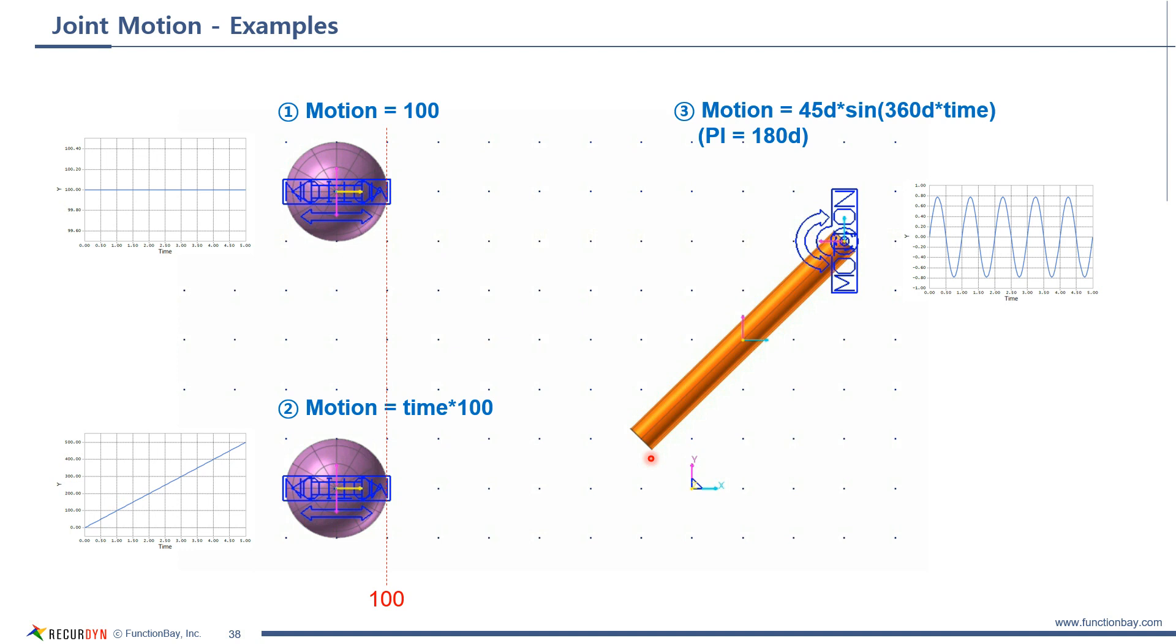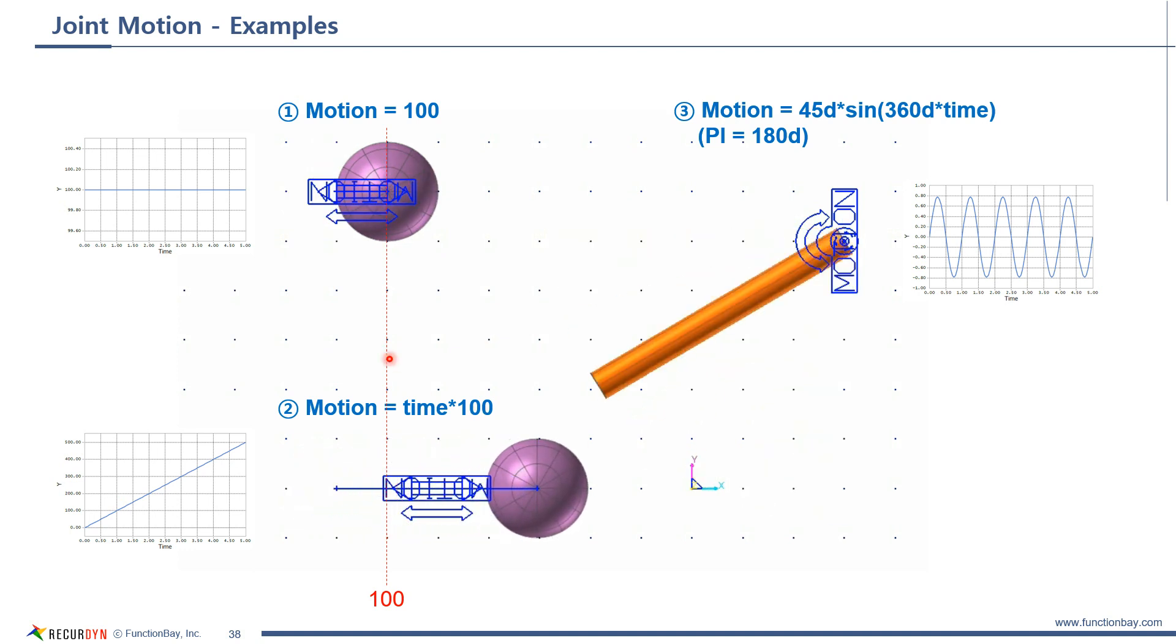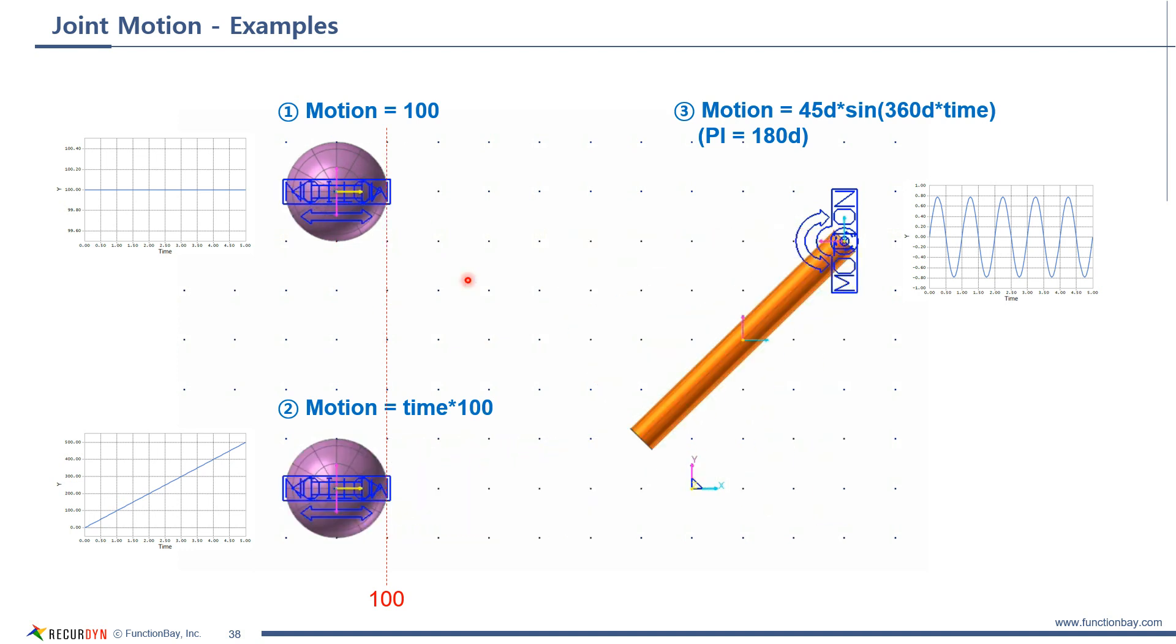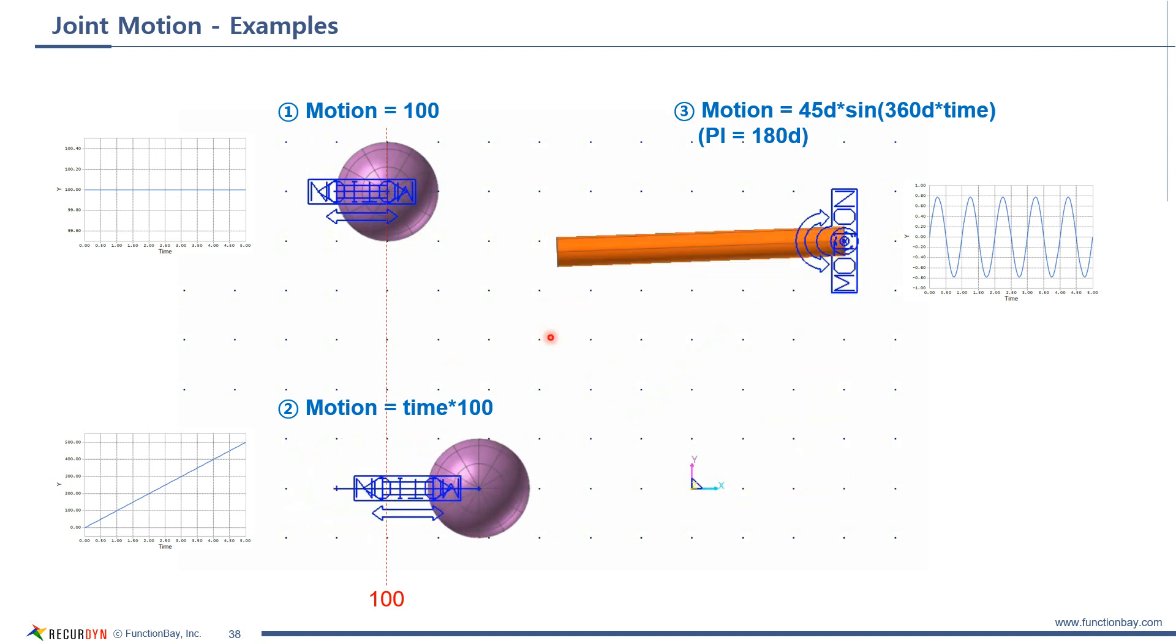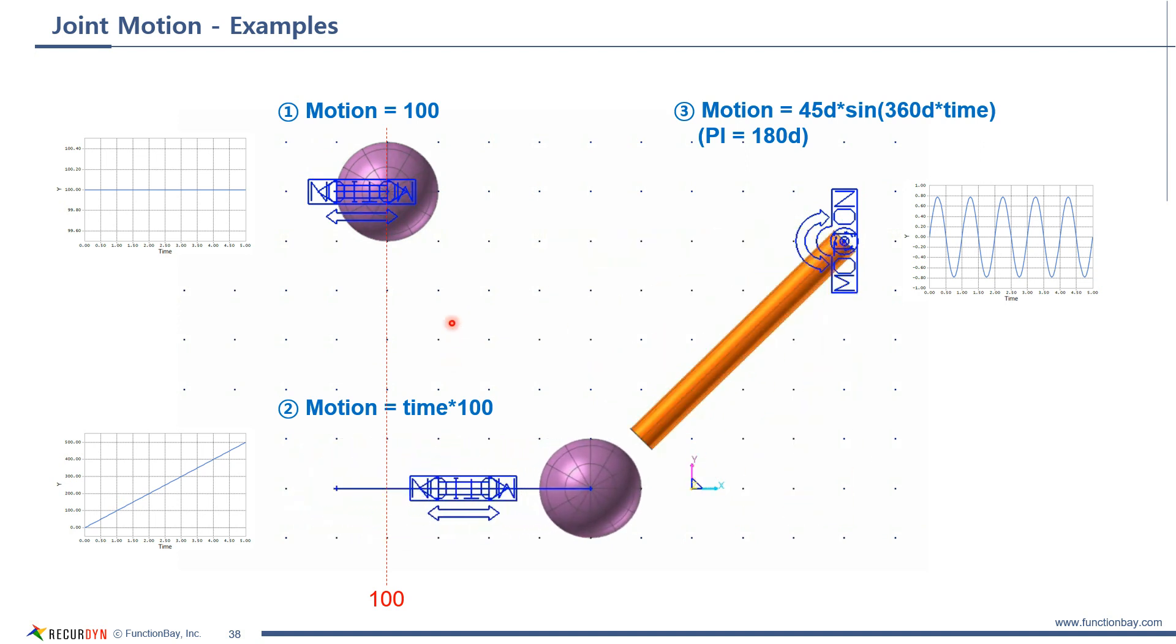These are the three examples of expression. All of them use displacement type. First one is the joint motion using constant value 100. So, as soon as the simulation starts, the sphere moves to a position of 100.